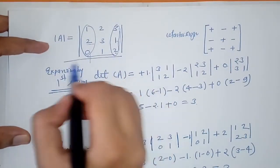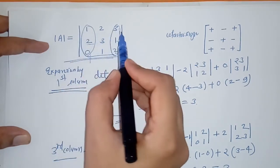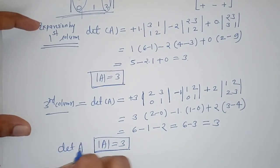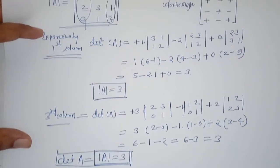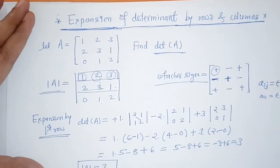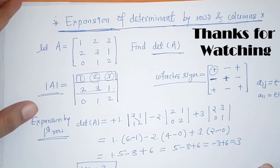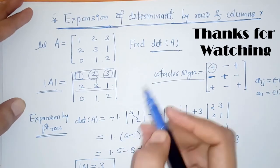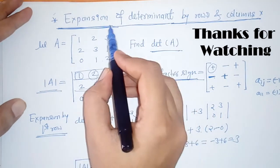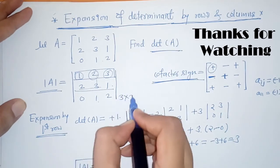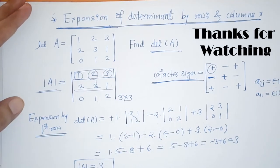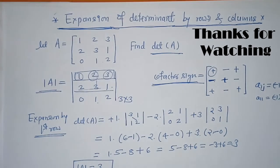We can see that expanding the determinant by any row or column gives the same value of 3. The key is knowing the cofactor signs. This method works for solving determinants of 3×3 matrices, and similarly we can solve any n×n square matrix using this method. This is all about expansion of determinants — thank you.